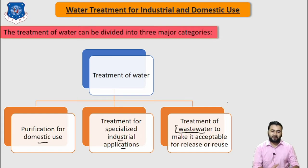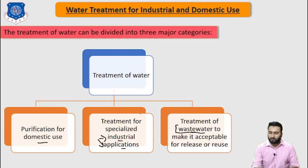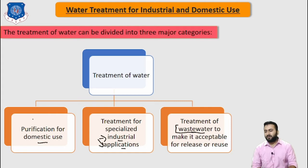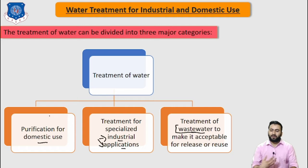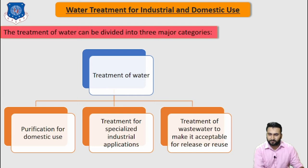Waste water treatment requires primary, secondary, and tertiary treatment. For the industrial application, we are taking the water from the river, so it requires a small amount of treatment such as internal treatment and external treatment. For the domestic use, we require a different plant which we can use for drinking purpose, and this water comes from groundwater. All these treatments have a different type of treatment method.